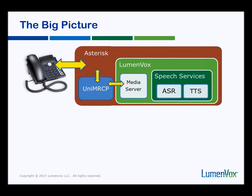So here's the big picture. We have an Asterisk server that processes phone calls in a number of different ways. As you can see, we have UniMRCP and Lumenvox all installed on the one server. UniMRCP acts as a module that communicates between Asterisk and the Lumenvox media server, and basically processes any requests that go out for ASR or TTS resources as part of the call.